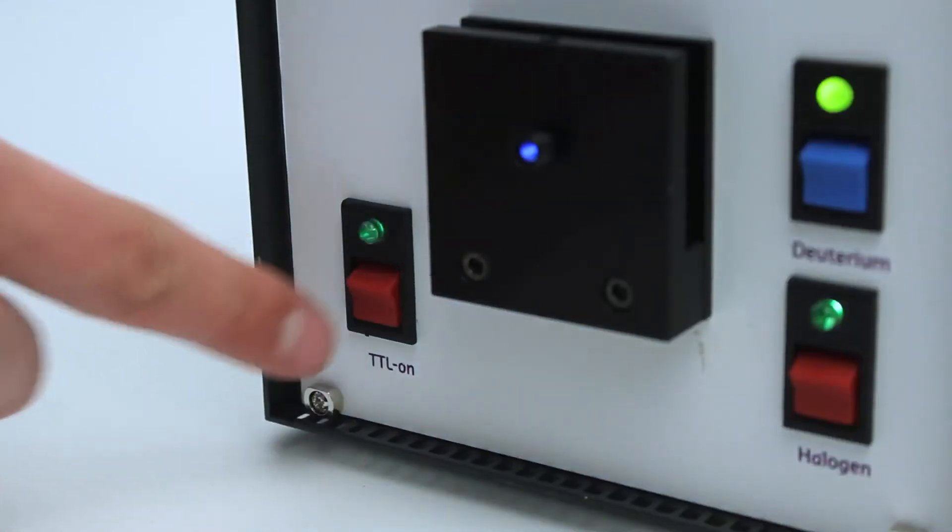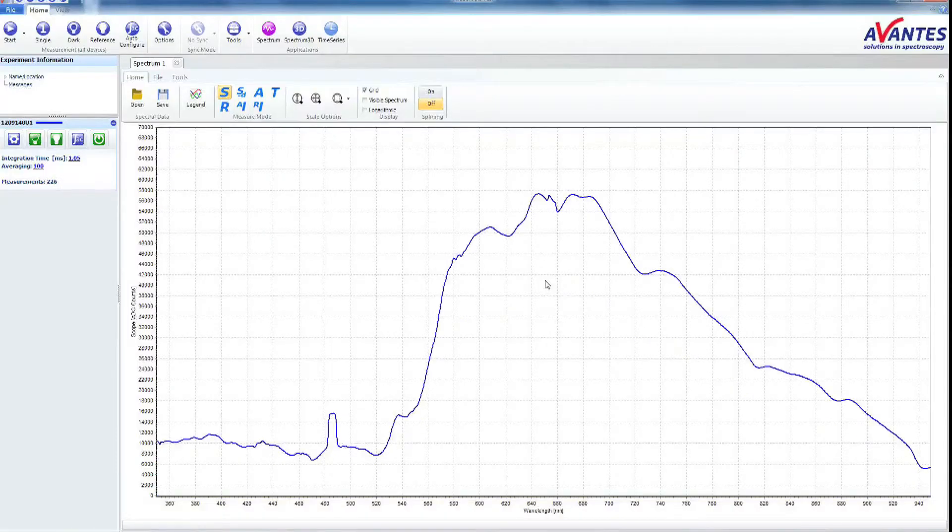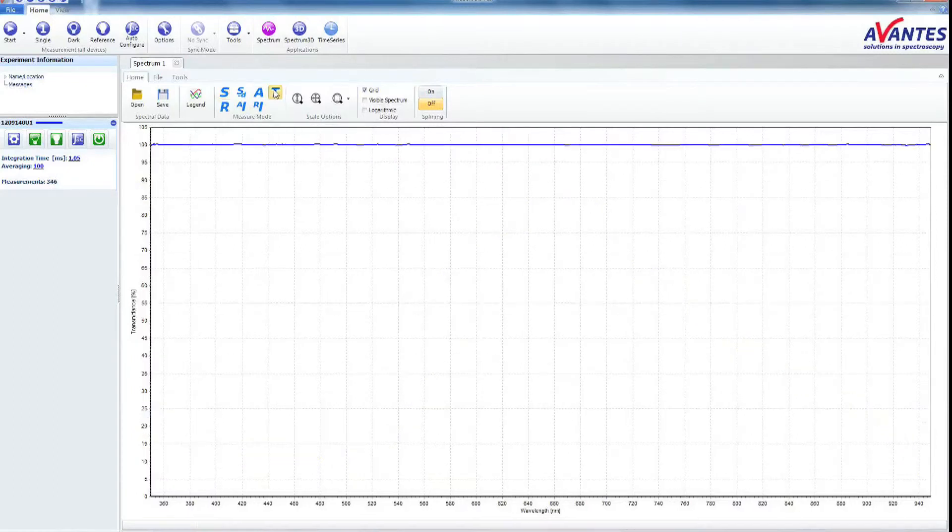Switch on the light source. To measure in transmission mode, please click the button labeled T. Transmissions will always be 100% without any filters or samples in the cuvette holder.